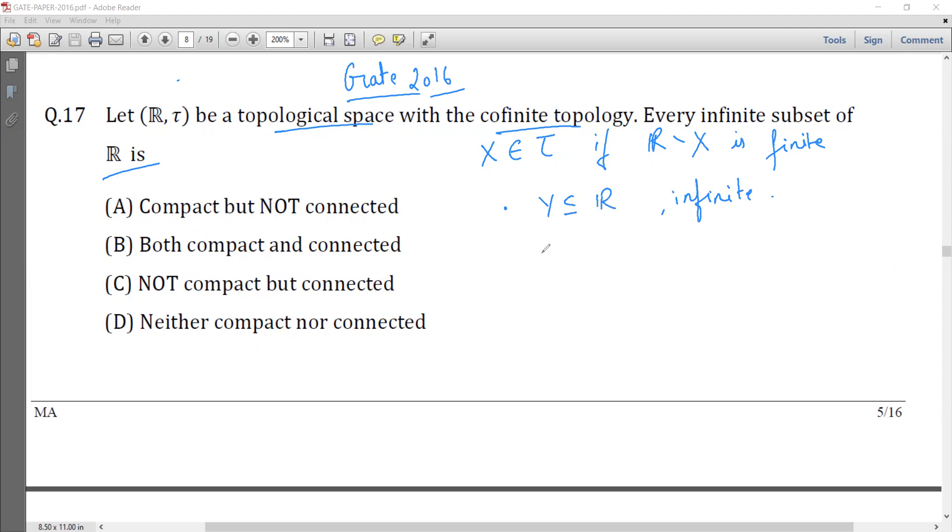Now note that if U alpha is an open cover of Y, then since Y is infinite, U alpha 1 is equal to R minus some finite set x1, x2, so on up to xk.